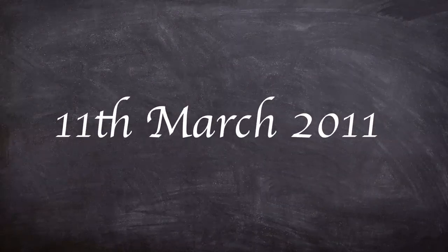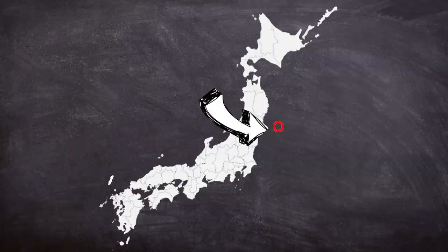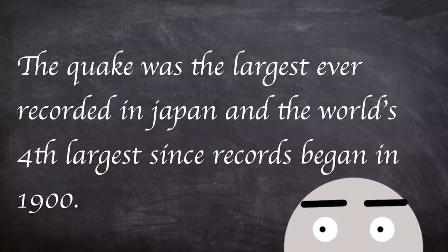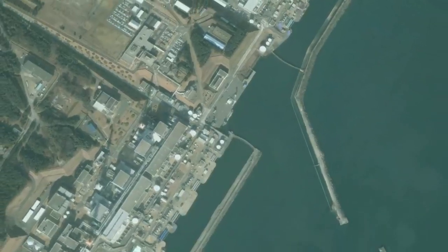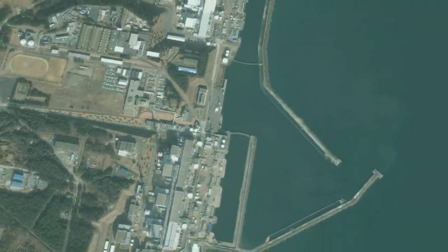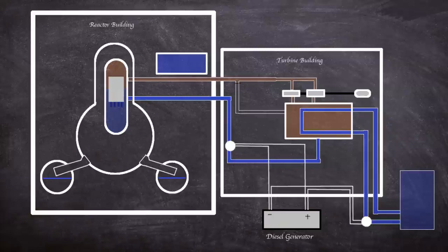On the 11th of March, at 14:46 local time, an earthquake of a magnitude of nine lasted for two minutes. It was caused by a sudden release of energy at the interface where the Pacific tectonic plate forces its way under the North American plate. The earthquake was the largest ever recorded in Japan and the world's fourth largest since records began in 1900. At the time of the earthquake, sensors at the plant detected ground movement and initiated a scram in the three operating reactors. This was built into the design of the plant and the action controlled the reactor's reactivity.